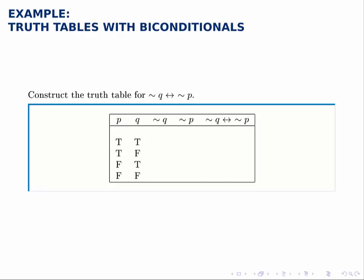Construct a truth table for this biconditional statement: not Q if and only if not P. First we'll build columns for not Q and then not P, and then we'll combine them with the if and only if, the biconditional.